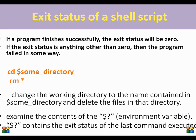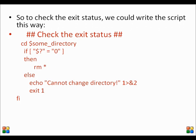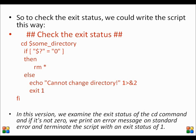To check the exit status of a shell script, we use the environment variable $?. Let us consider a code to check the exit status of this command. First we change the directory to some_directory. Then we check the exit status of the command. If $? is equal to 0, then we remove all the files in the directory. Otherwise, we display the error message and we exit to the terminal.